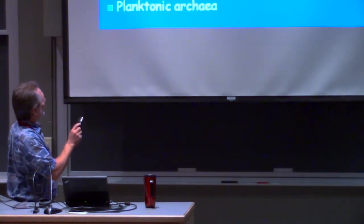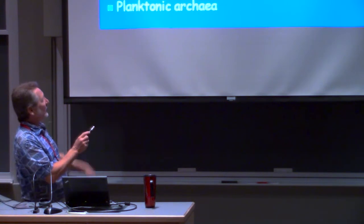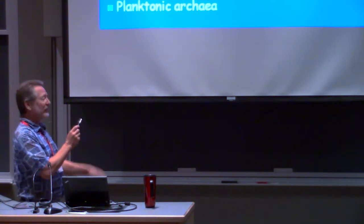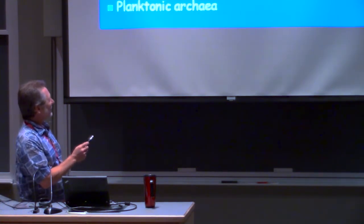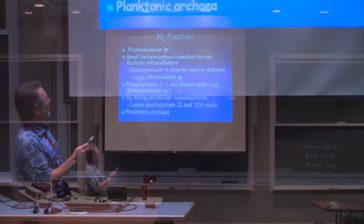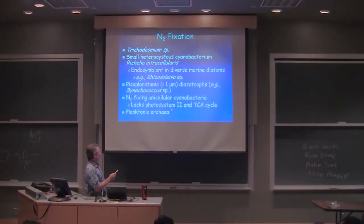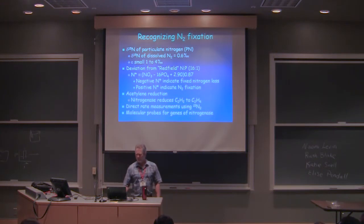There are also picoplanktonic diazotrophs — really small diazotrophs. There are N2-fixing unicellular cyanobacteria, weird ones that lack photosystem II. In the TCA cycle there are even archaea that fix N2.